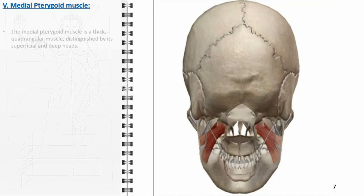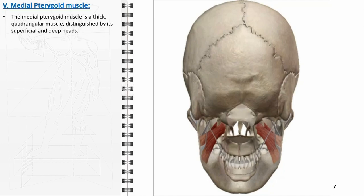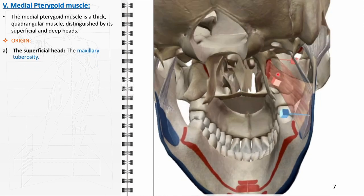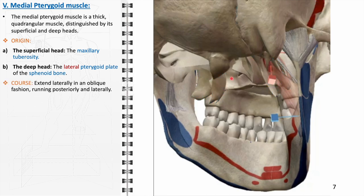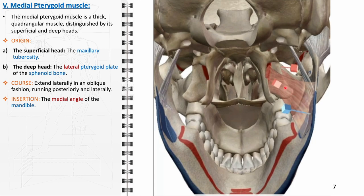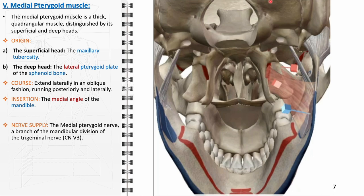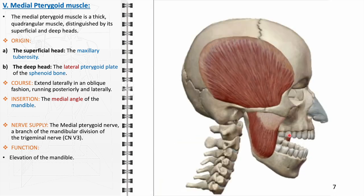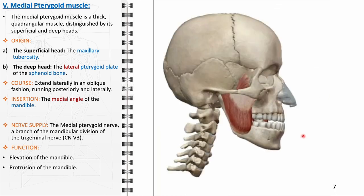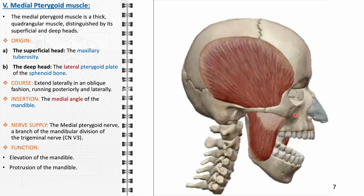The medial pterygoid muscle, characterized by its robust quadrangular shape and two distinct heads, is essential in the complex mechanics of jaw function. The superficial head originates from the maxillary tuberosity, and the deep head from the lateral pterygoid plate of the sphenoid bone. These fibers course obliquely, running posteriorly and laterally, converging to insert at the medial angle of the mandible. It receives its nerve supply from the medial pterygoid nerve, a branch of the mandibular division of the trigeminal nerve. Functionally, it is indispensable for elevating and protruding the mandible, facilitating the grinding and crushing of food.